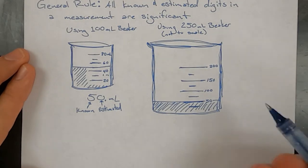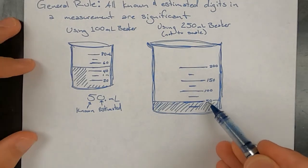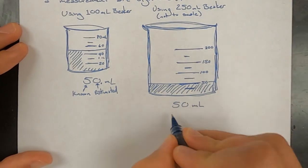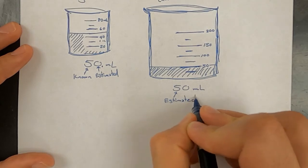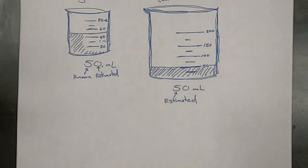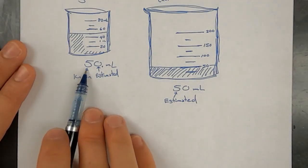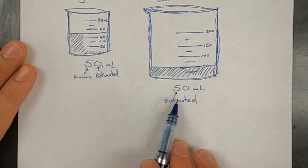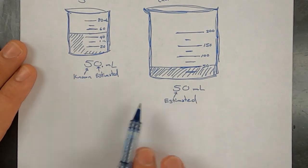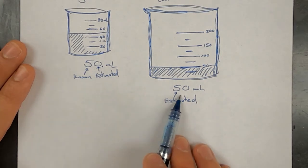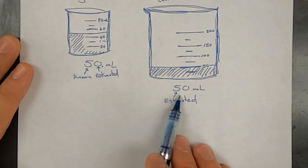In the 250 mL beaker, because there are not marks for every 10 milliliters, the tens place is estimated. Going back to our definition of a significant figure, we can see that the first measurement has two sig figs in it, while this measurement has only one sig fig. The first measurement was made with more detail; this was made with less because it has fewer significant figures.